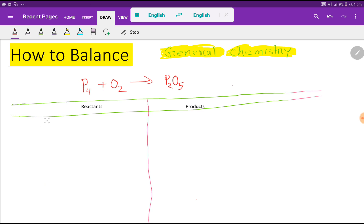So look, in the left hand side we have four phosphorus, and we have here two oxygen. In the right hand side we have here two phosphorus and here we have five oxygen.